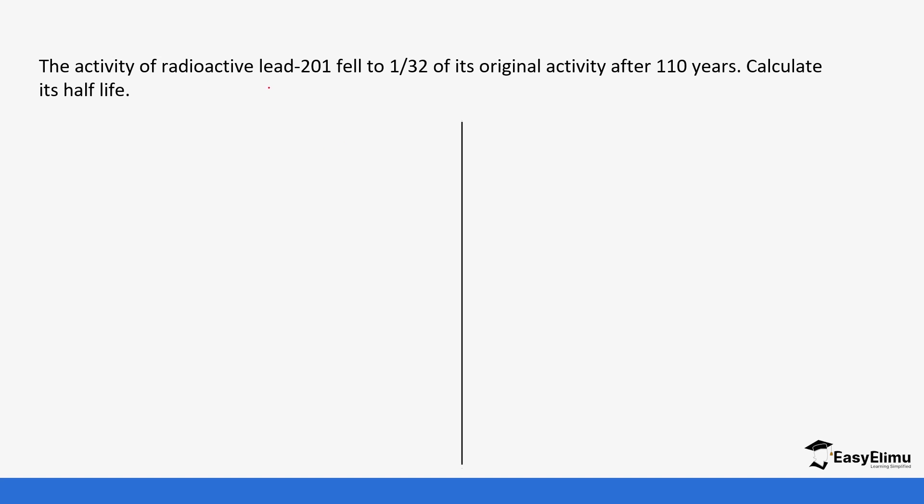The activity of radioactive lead-210 fell to 1/32 of its original activity after 110 years. Calculate its half-life. You have to know how many halves are there to form 1 over 32. First we start with a whole and then it disintegrates by half so this becomes 1/2. Another half it becomes 1/4. Another half it becomes 1/8. Another half 1/16 and finally 1/32. How many halves do we have? 1, 2, 3, 4, 5. We have 5 half-lives.